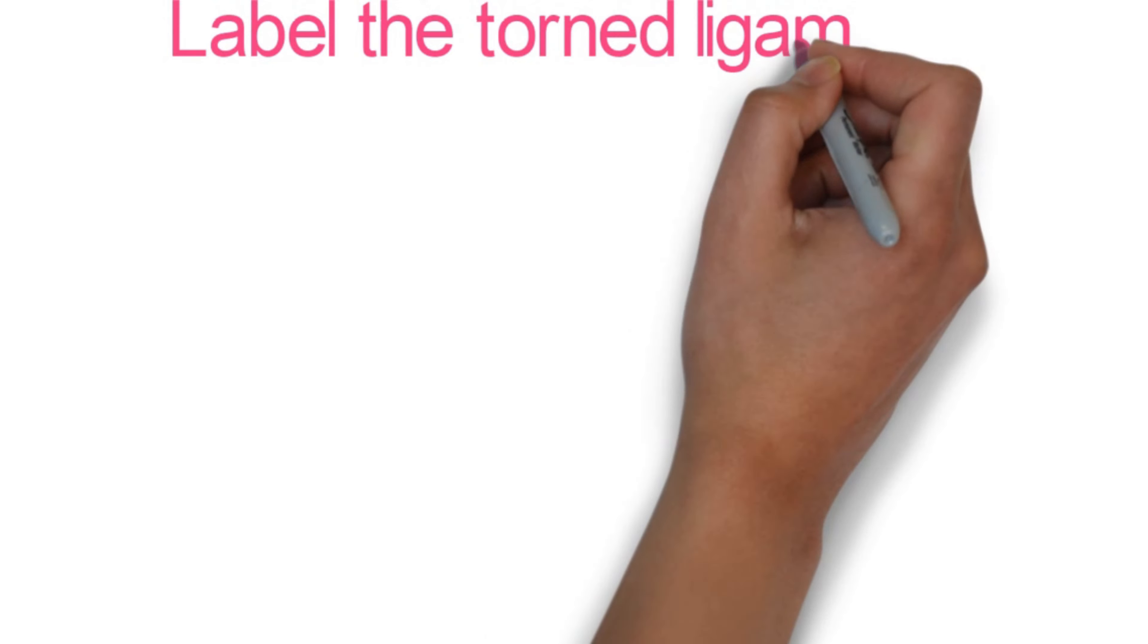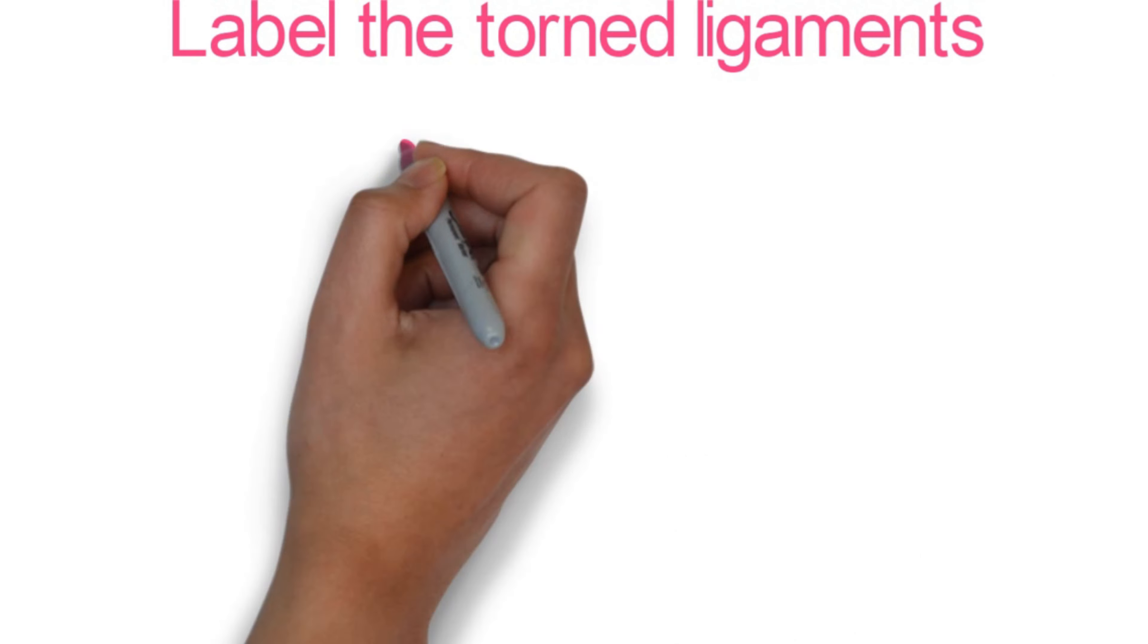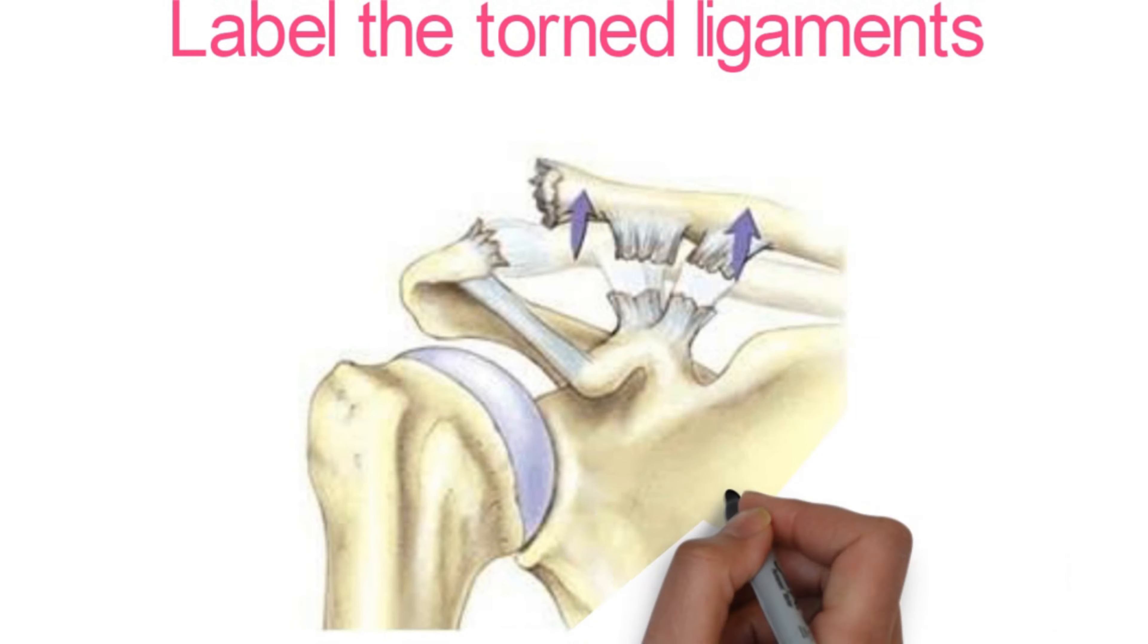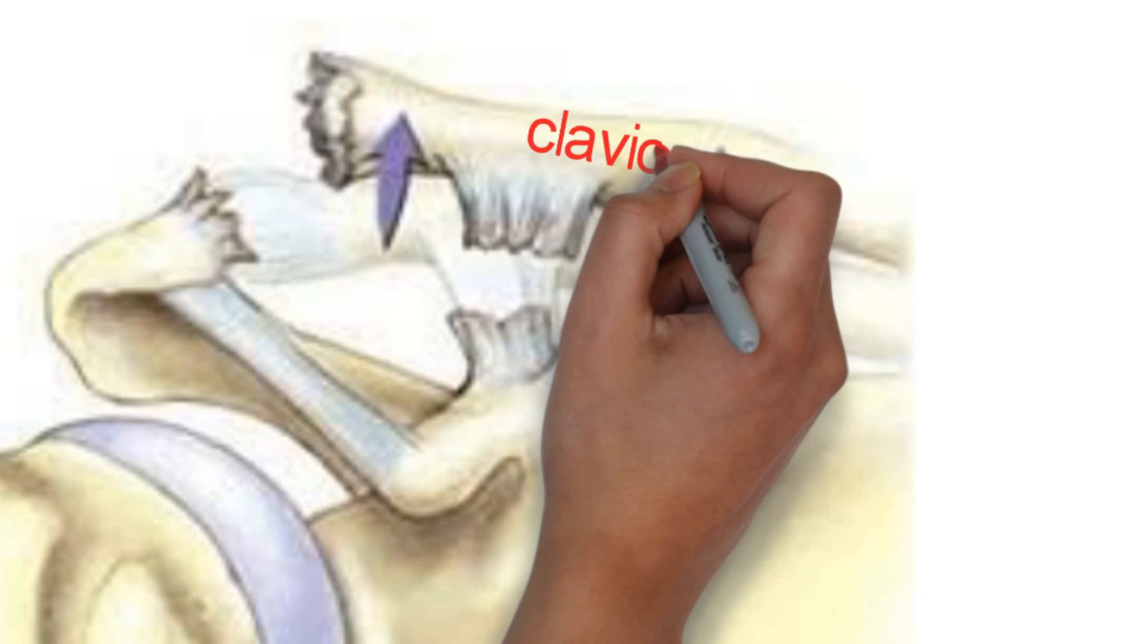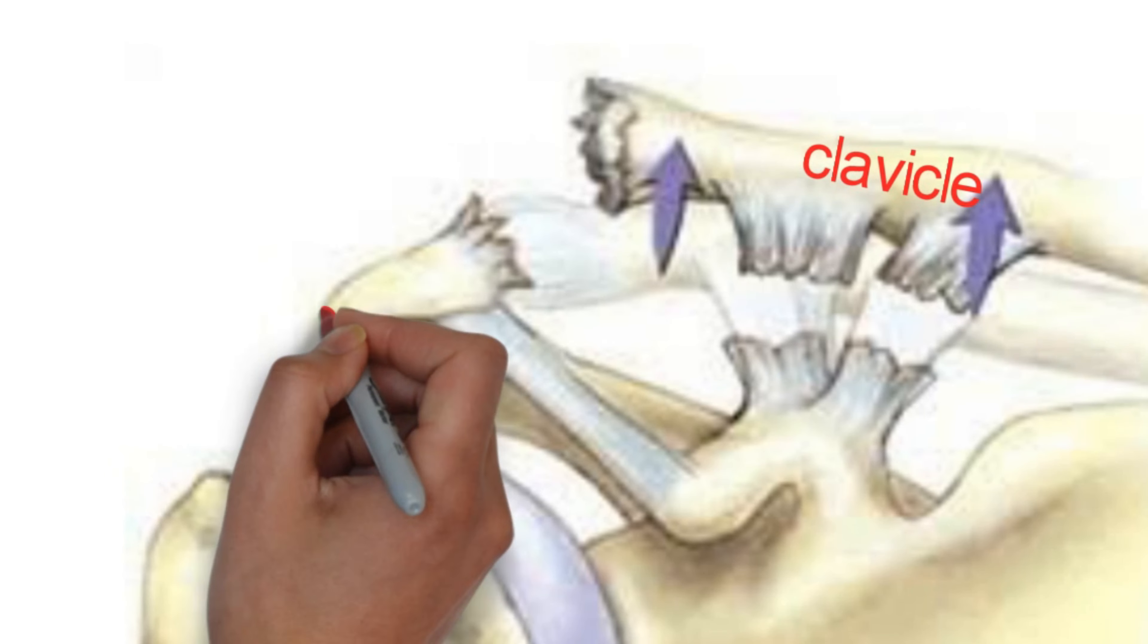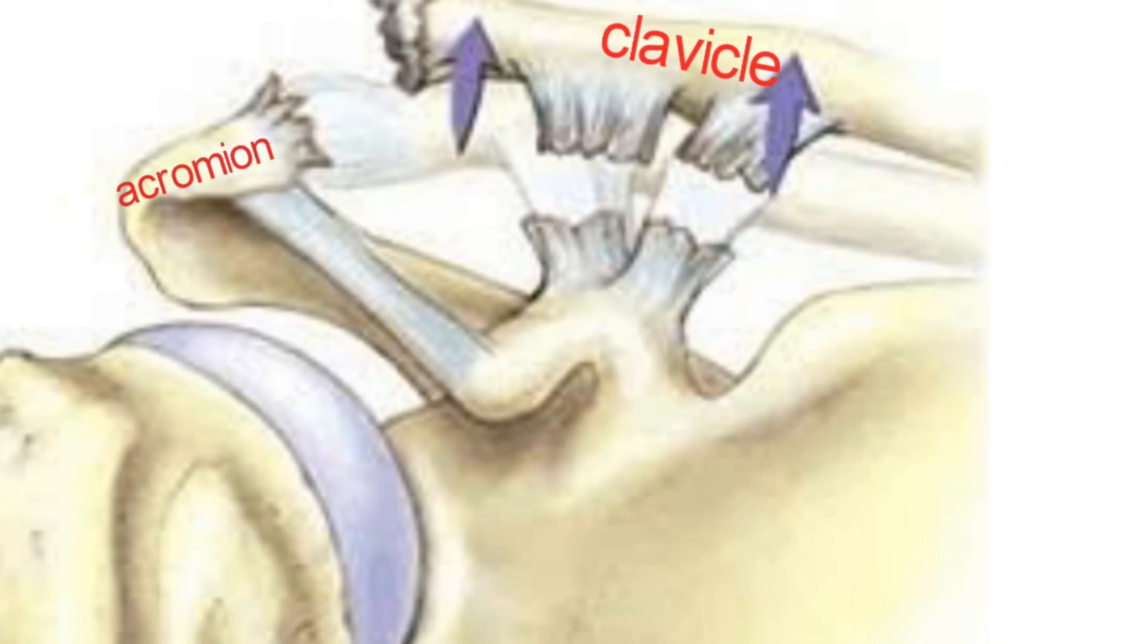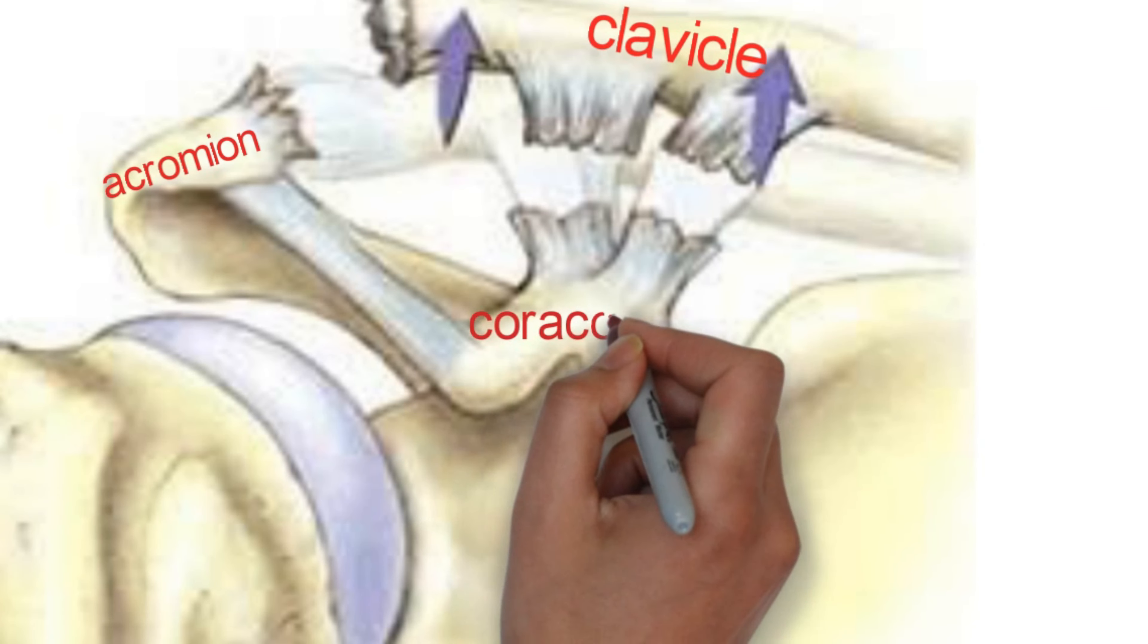Label the torn ligaments. Try to think about it. You need to first label the bones, this is the clavicle. We have here the acromion, it's part of the scapula, and here is the coracoid. Now it's very much easy.